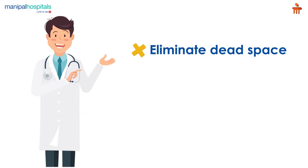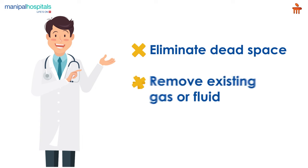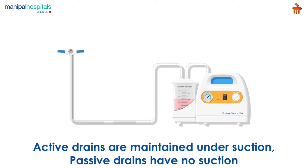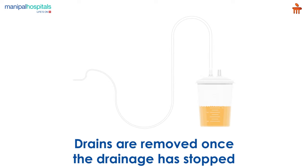The main indications of drain use include the need to eliminate dead space, remove existing fluid or gas, and prevent accumulation of fluid or gas. While active drains are maintained under suction, passive drains have no suction and work according to the differential pressure between body cavities and the exterior. Generally, drains are removed once the drainage has stopped.